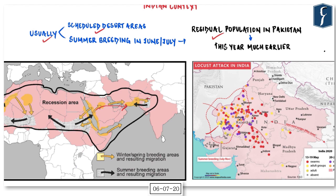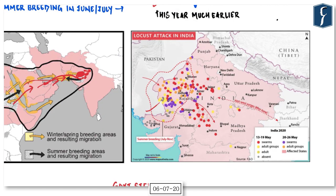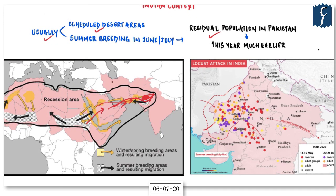Locusts coming to India originate from the Horn of Africa, travel to Middle Eastern countries, and then move on to India. The remaining population in Pakistan was attracted by the Rabi crop of Punjab, Haryana, and Rajasthan, causing them to strike India much earlier than normal. In the map, locations where swarms are developing are shown in red and affected states in pink.